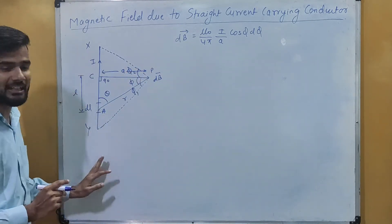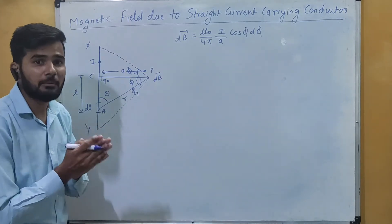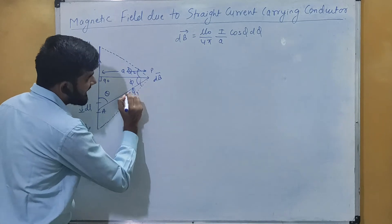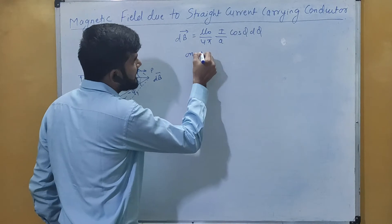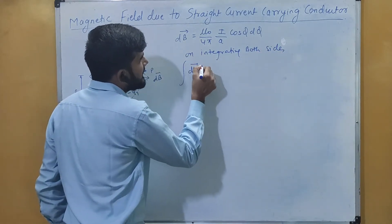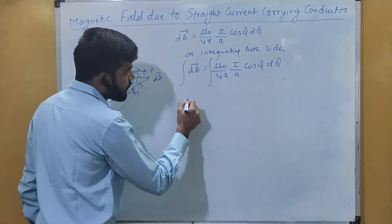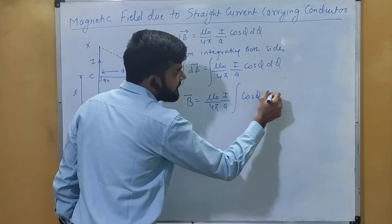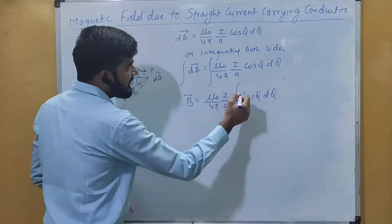The end-to-end angle goes from phi₁ to phi₂. However, the direction of both angles is exactly opposite, so we consider one angle as negative. We integrate from -phi₁ to phi₂. Integrating both sides, we get: B = μ₀/4π × I/A × ∫cos φ dφ with limits from -φ₁ to φ₂.